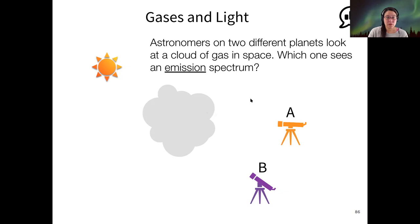So I'm seeing most votes for A, but still a small contingent for B. So let me show you how I think of this. If I have some light from the source, I just care about the one that's going kind of in a straight line toward this cloud. And then astronomer B is seeing the light through the cloud. And so the light that they receive is being removed from the cloud. So that's not an emission spectrum.